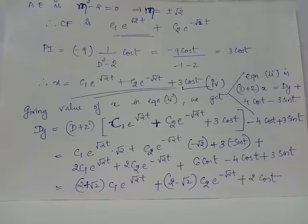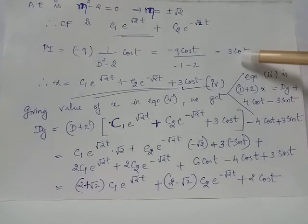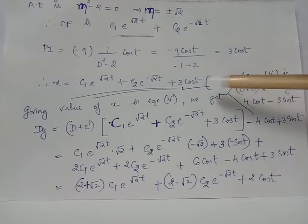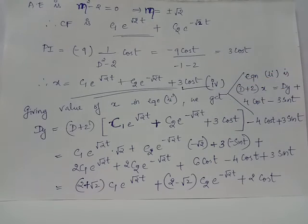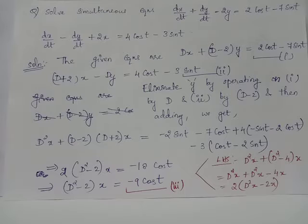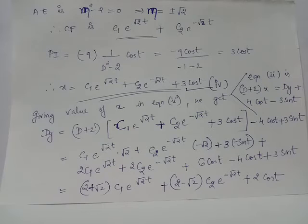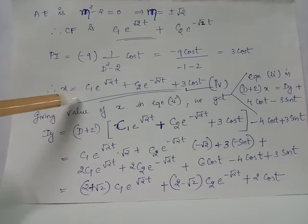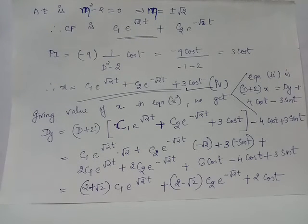The general solution for the dependent variable x is the sum of the complementary function and the particular integral. This gives us equation 4: x = C₁e^(√2·t) + C₂e^(-√2·t) + 3cos(t).